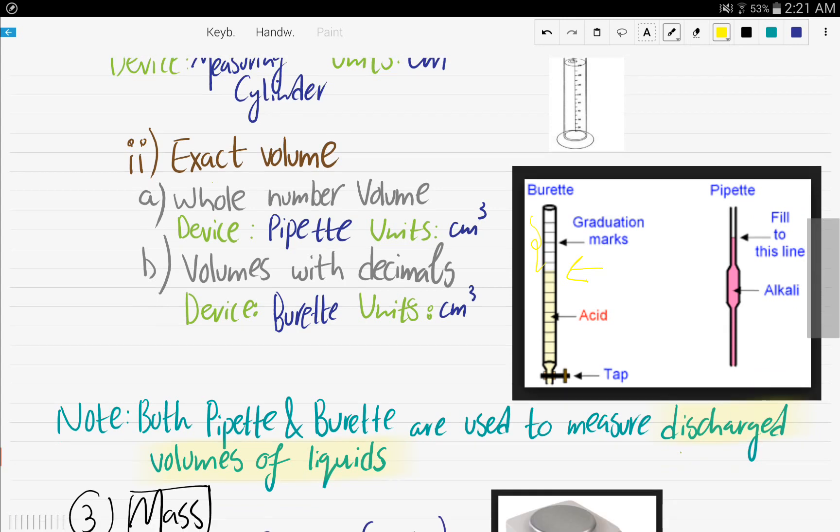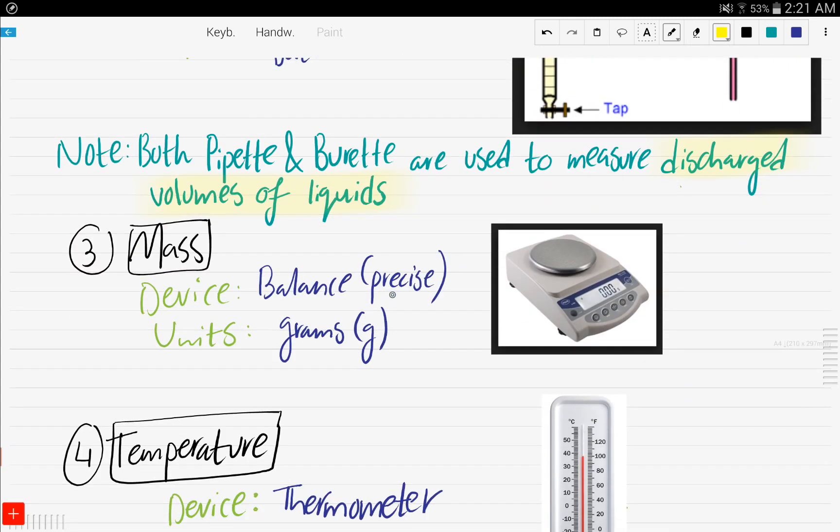So now, next, if you want to measure mass, as we all know, use a balance. It is precise. It gives you it in decimal. That's the electronic balance, and it's usually available in all labs, and the unit is grams.